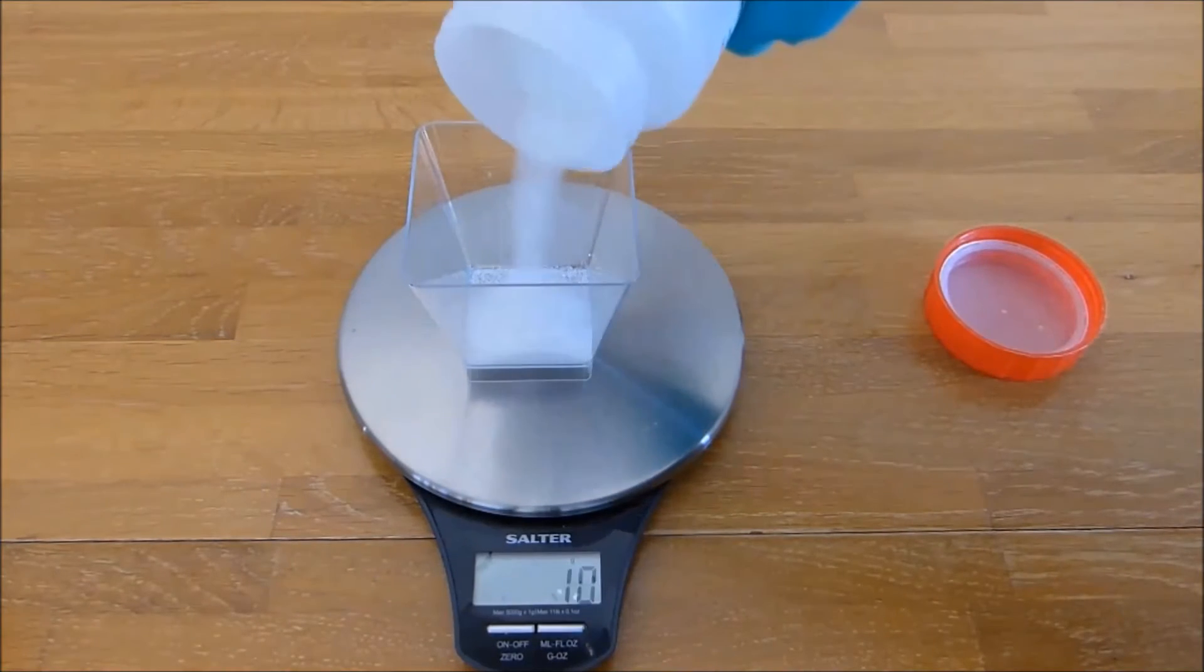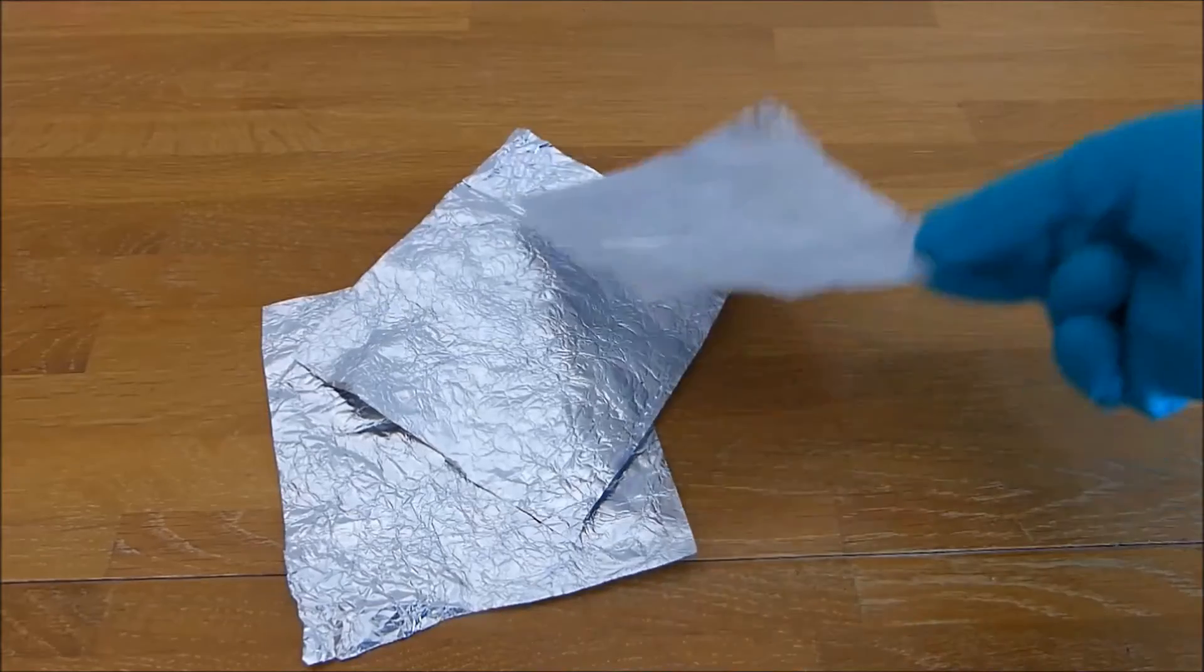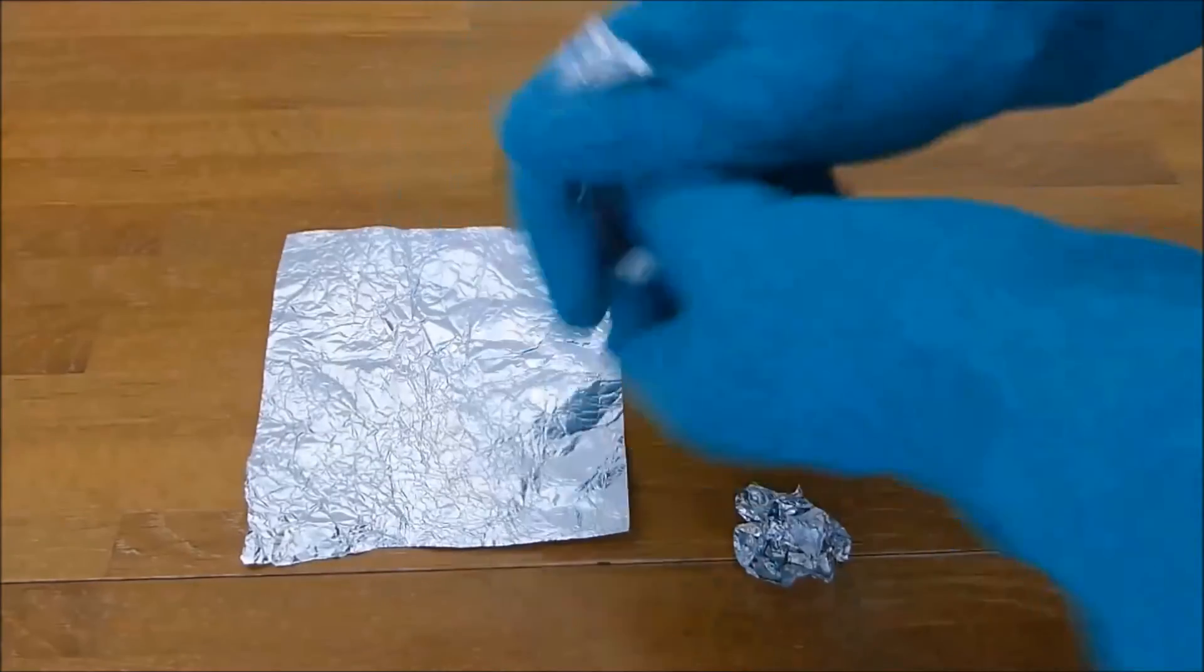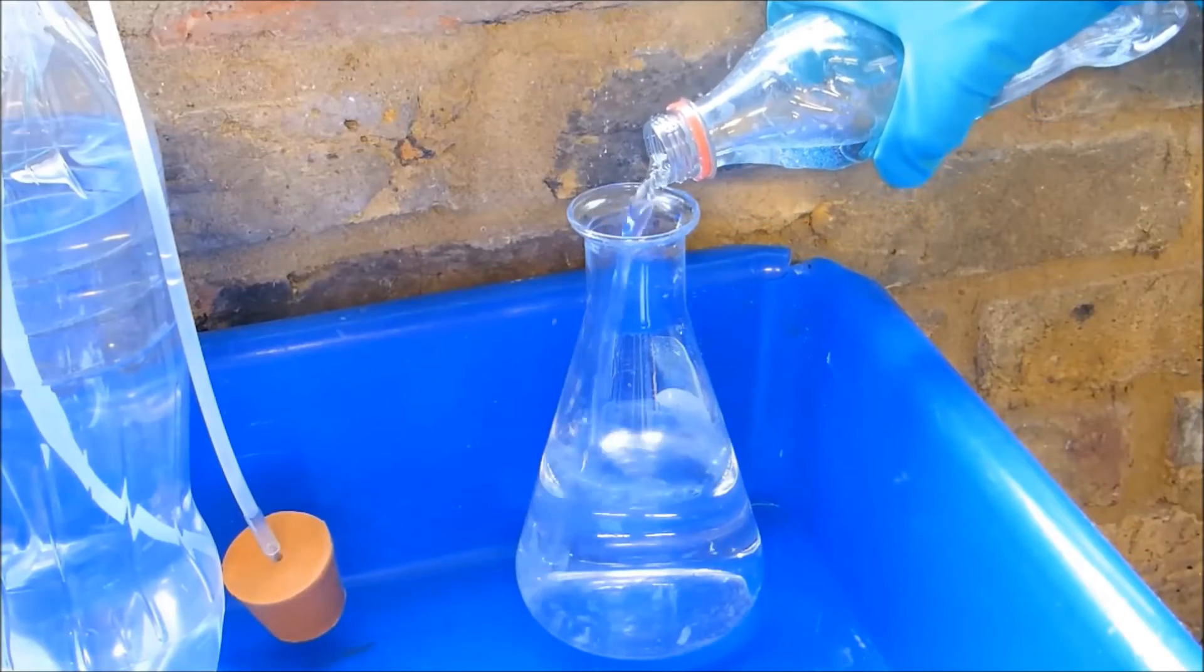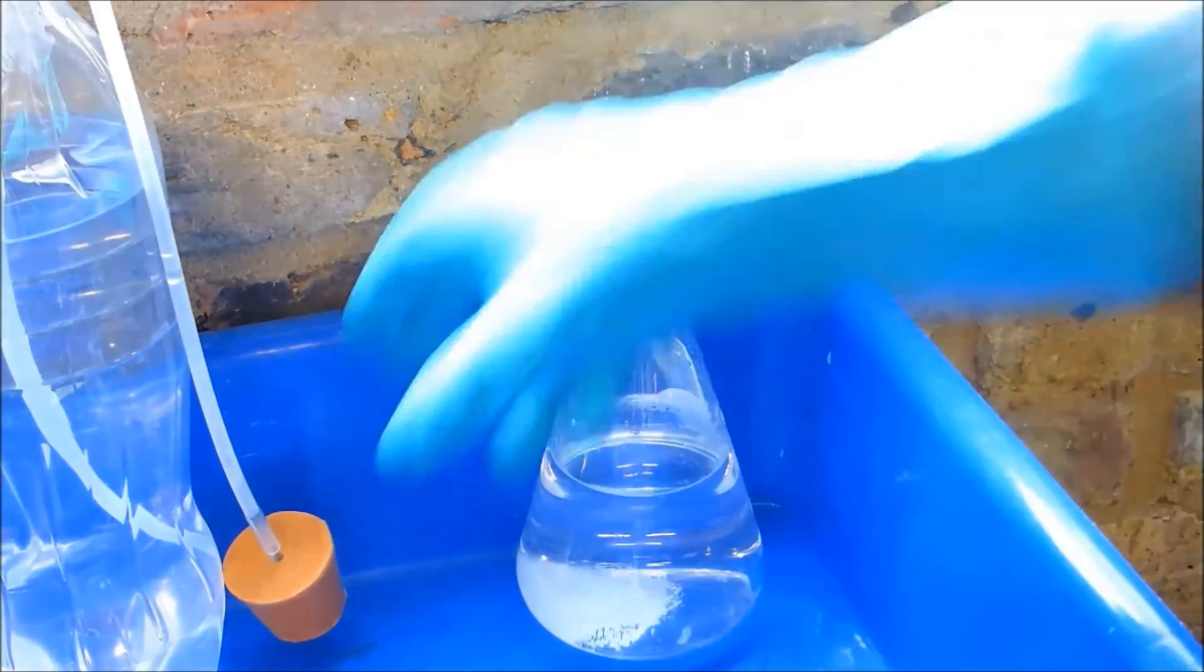I measured out 20 grams of sodium hydroxide, scrunched up some aluminium foil into balls. Then I added 400 milliliters of distilled water into the heat proof container and slowly added the sodium hydroxide.